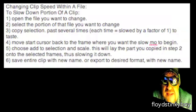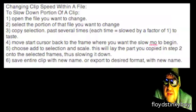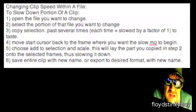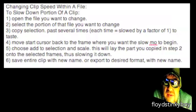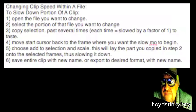In order to slow down a portion of a clip within a single file of QuickTime Pro, open the file that you want to change, select a portion of that file that you want to change, copy that selection, move the cursor to the end of the selection, and paste it several times using Command-V.